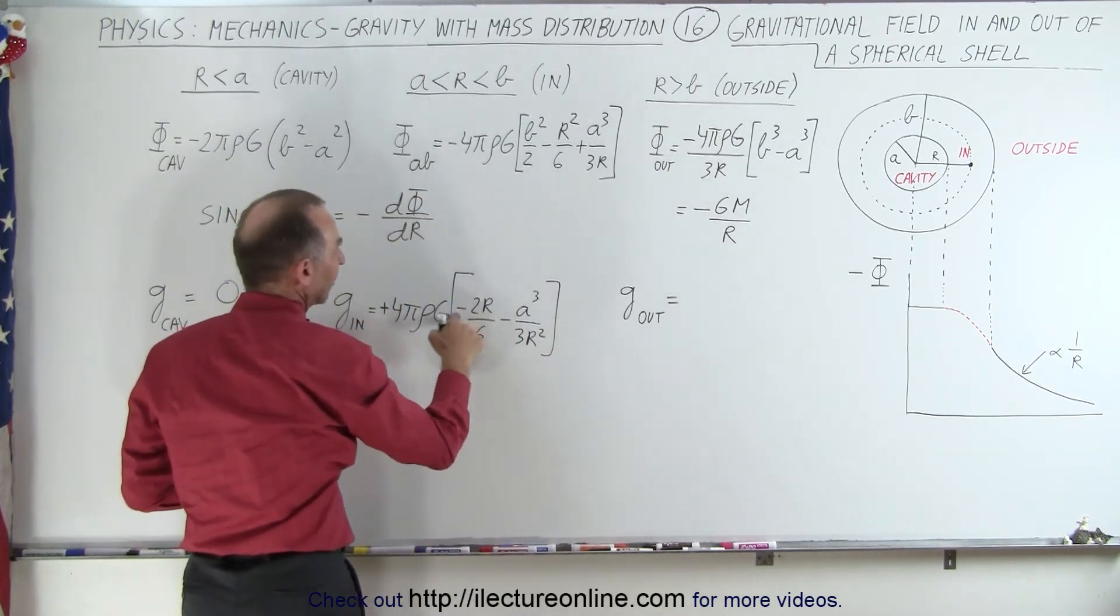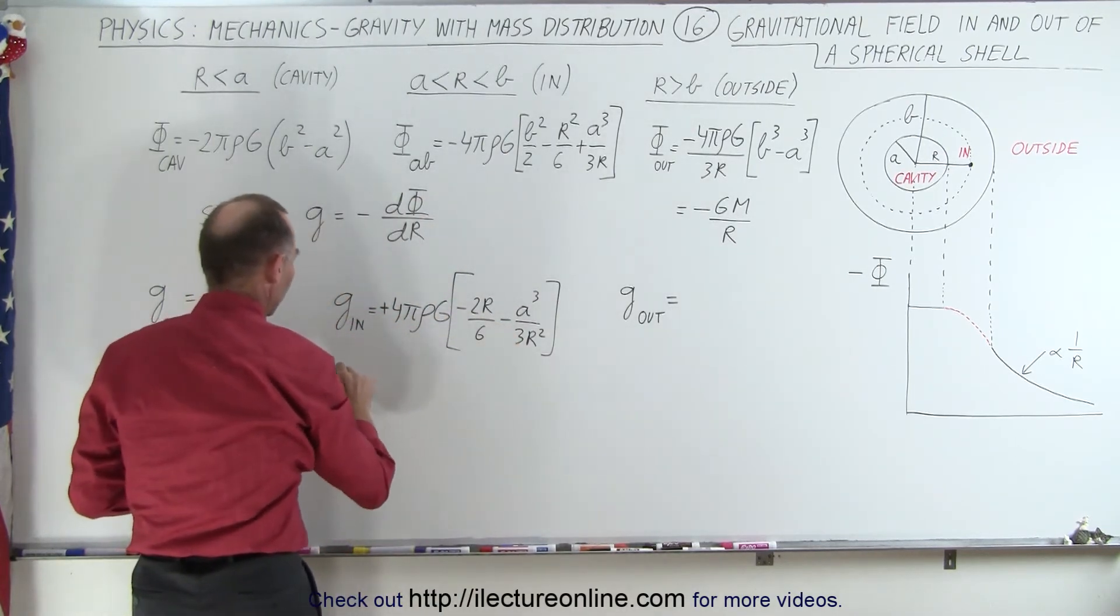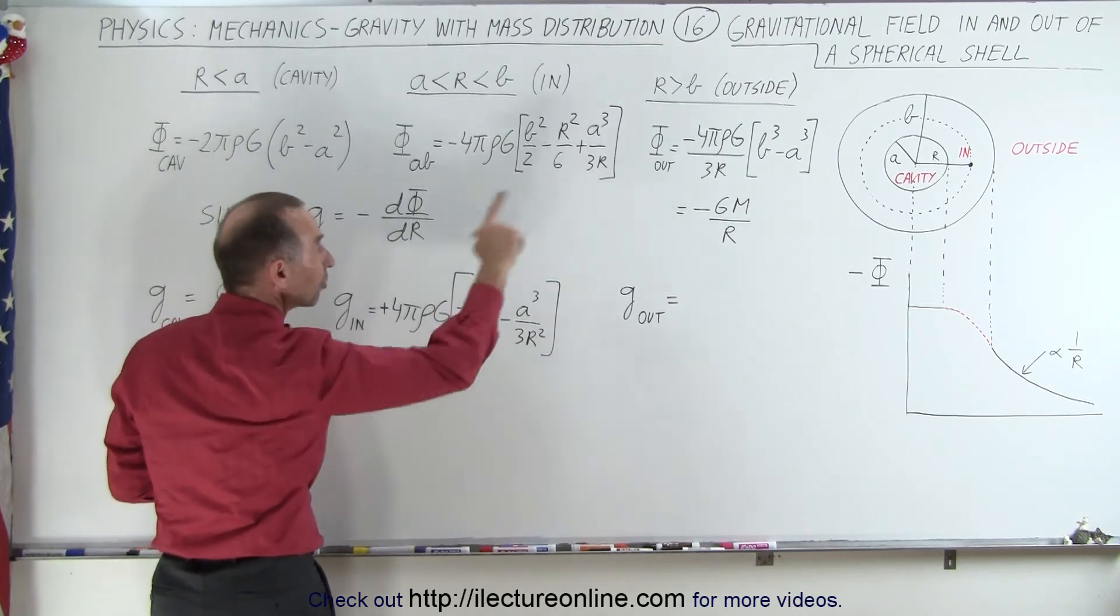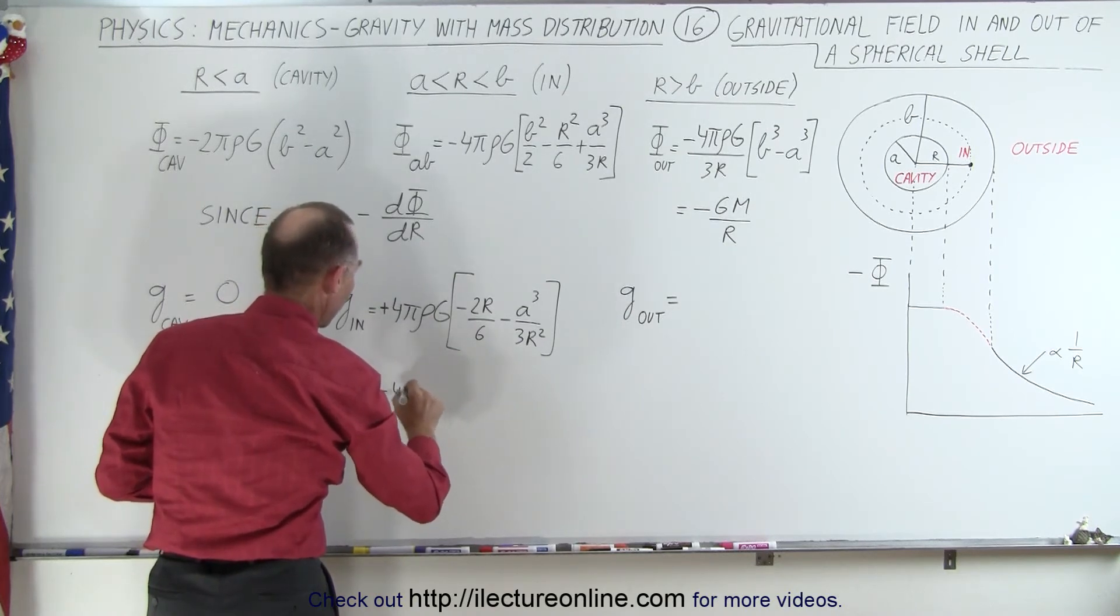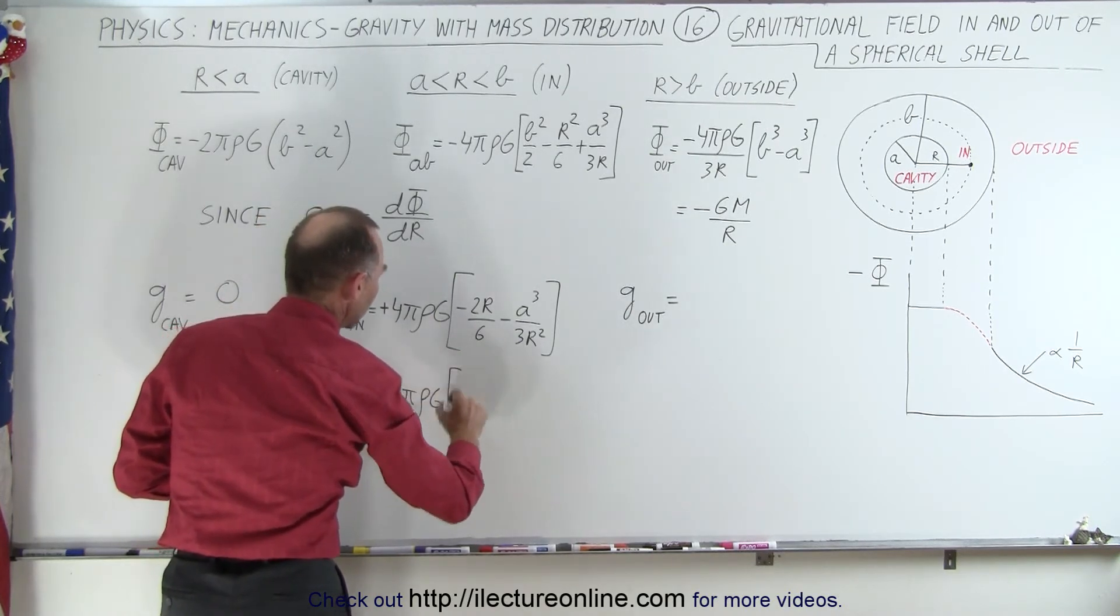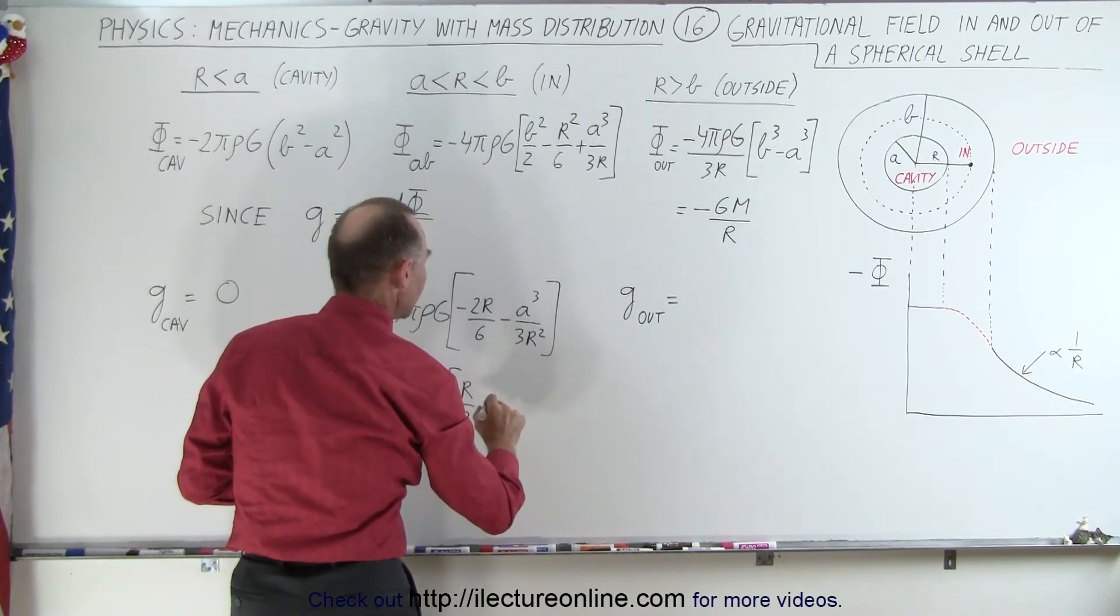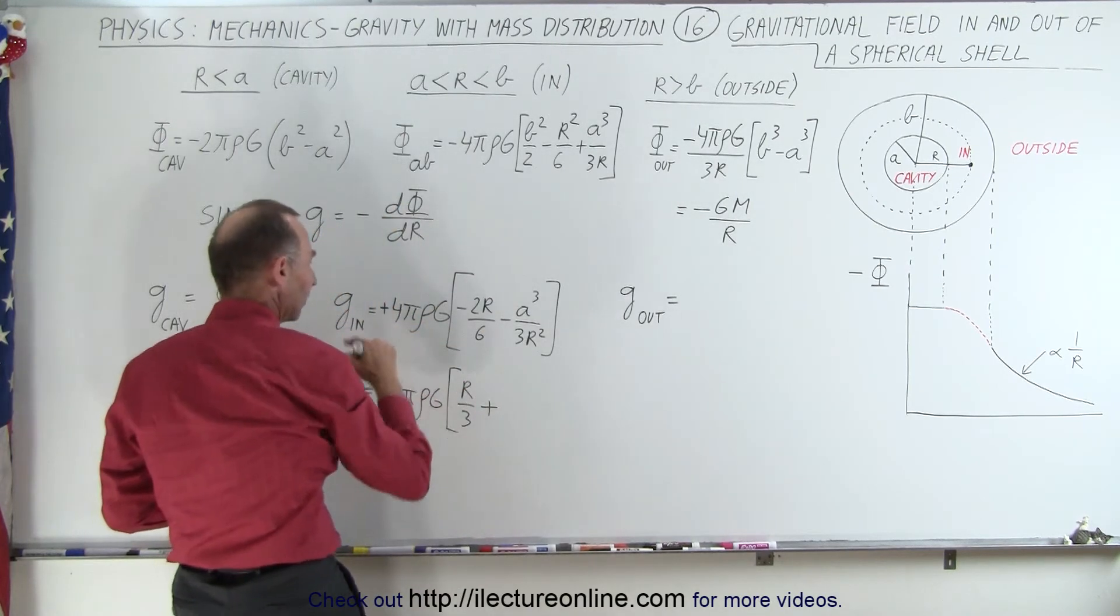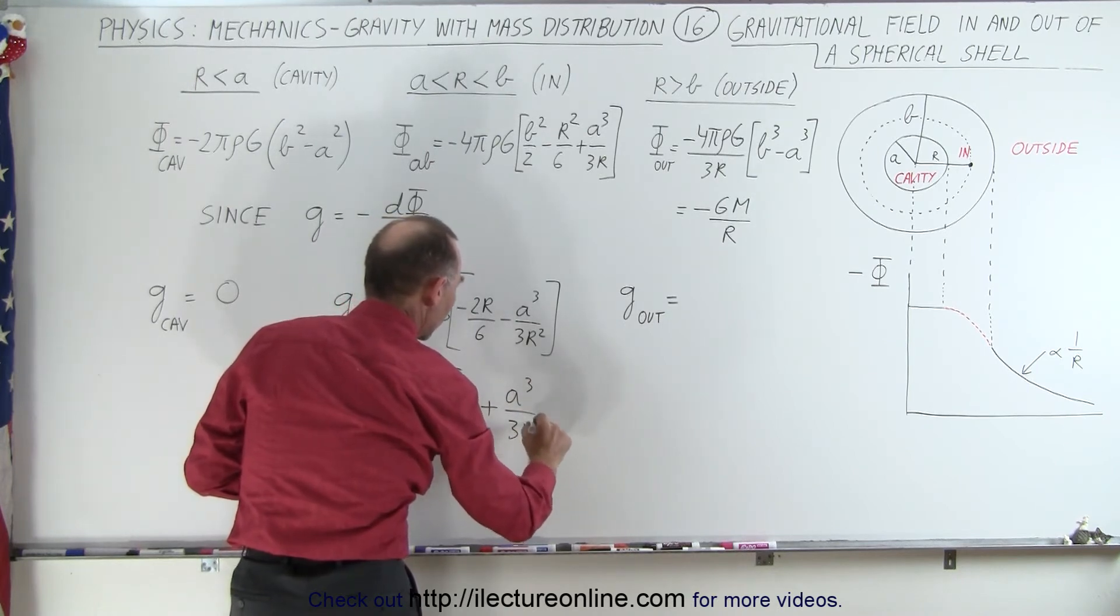Notice that we have two negatives here, make this into a negative to turn those into a positive, so the gravitational field inside the material portion of the sphere is going to be minus 4 pi rho g times r divided by 3, and that would be plus, because we put the negative in front, a cubed divided by 3r squared.